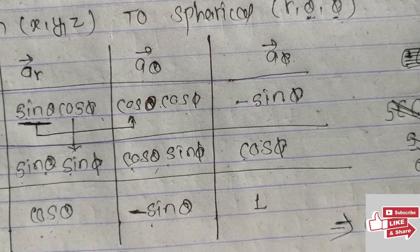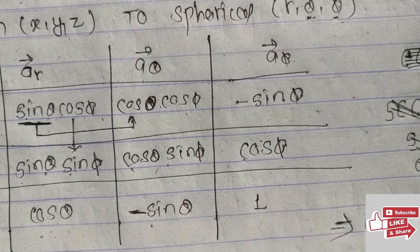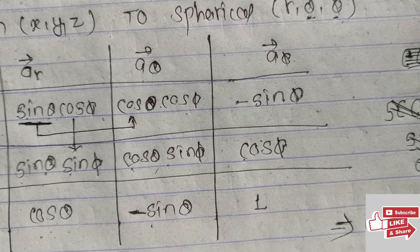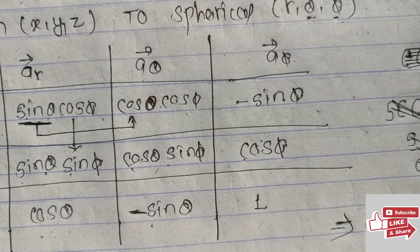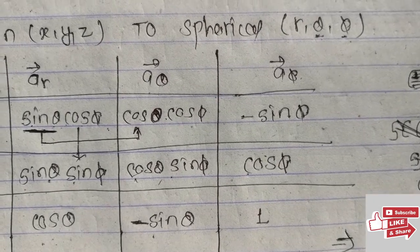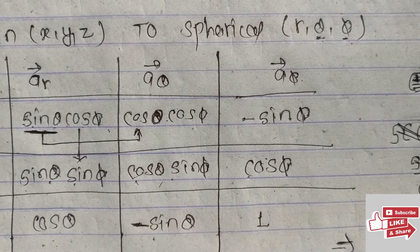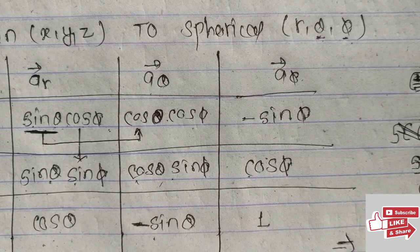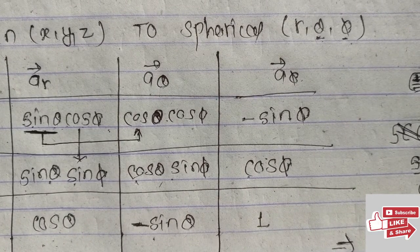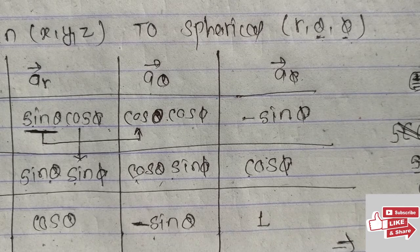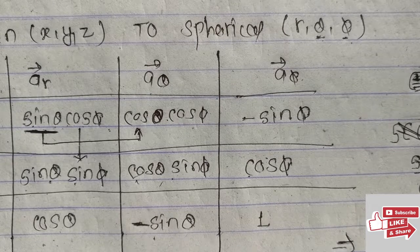This is the trick to remember the dot product of the vector transformation, or dot product of the coordinate system. For more detail, you can go through the earlier videos I have uploaded on my channel, or you can click the i-button. Thank you so much.